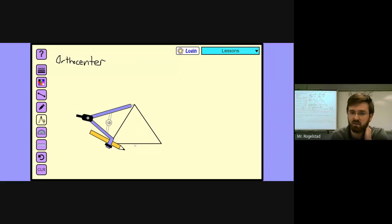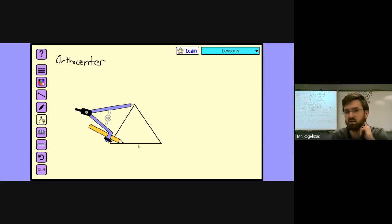that means I'm going to be using this side to find the perpendicular line from this vertex to the side. So do that.